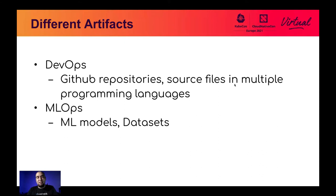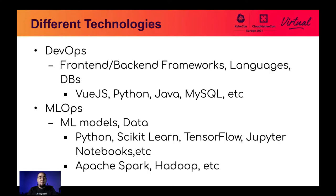The artifacts in DevOps are GitHub or Git repositories, source files in multiple programming languages. MLOps is more focused on machine learning models and datasets. DevOps uses technologies like frontend frameworks, backend frameworks, languages, and databases — Vue.js, Python, Java, MySQL, etc. In MLOps, people talk more about models, data, and technologies like Python, scikit-learn, TensorFlow, Jupyter notebooks, Apache Spark, the Hadoop ecosystem, and Airflow.